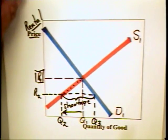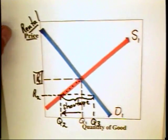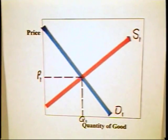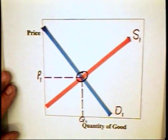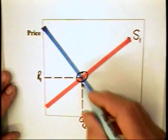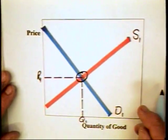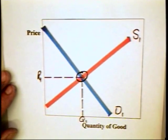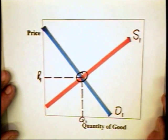In order to understand the full consequences of rent controls, you must understand the thinking of landlords. Landlords just don't choose a price like R1 and quantity Q1. They also recognize that they might be able to influence the demand of the good by upgrading the quality of the good.